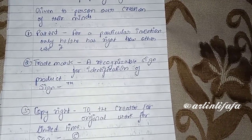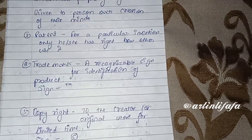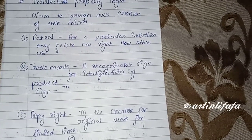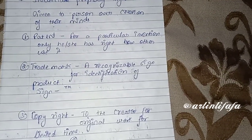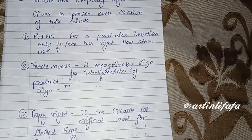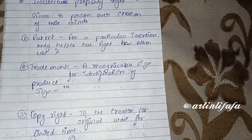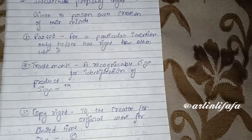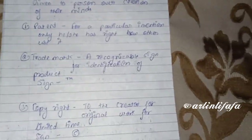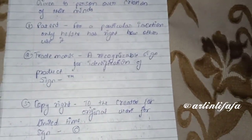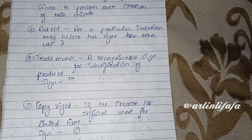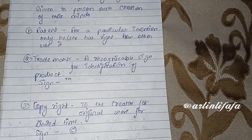A trademark is a recognizable sign or particular identification for a product — it gives a product a particular recognition. Examples include ISO trademark or food trademark.